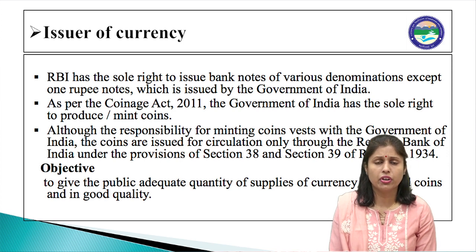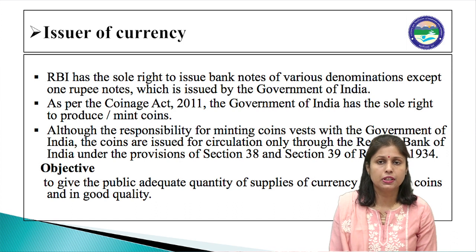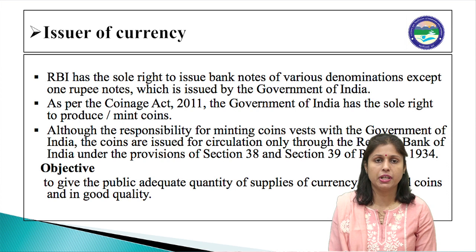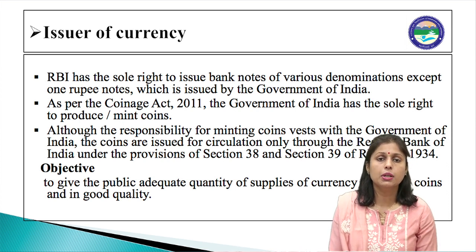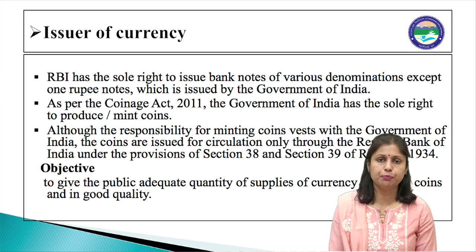So coins like 5 rupee, 10, and 20 rupee coins are produced by the Government of India but come into circulation through RBI. The objective of this function is to give the public an adequate quantity of currency notes and coins in good quality.